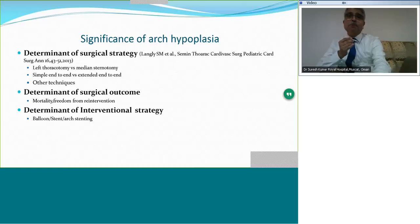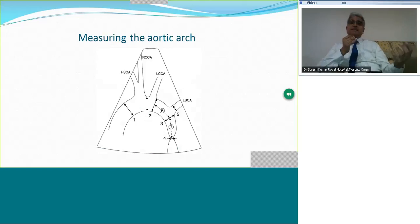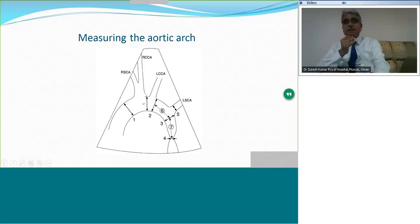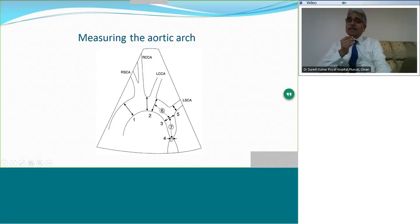So arch is important. How do you assess the arch? The proximal transverse arch is the segment between the innominate and the left common carotid. The distal transverse arch is the segment between the left common carotid and the left subclavian. The isthmus is the portion between the left subclavian and the duct or duct ligament. These terminologies should be clear. When you measure, you measure the transverse diameter in systole at the marked places.